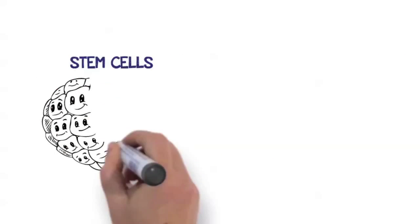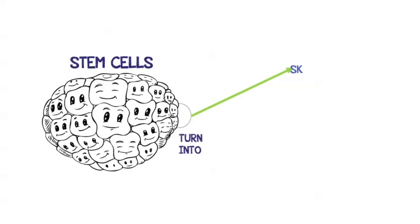You see, stem cells are like a blank slate, able to differentiate into any type of cell needed depending on the environment in which they are placed.